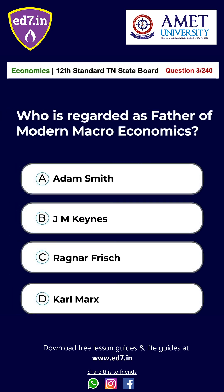Question 3. Who is regarded as the father of modern macroeconomics? A. Adam Smith, B. James Cain, C. Ragnar Frisch, D. Karl Marx. The answer is Option B: James Cain.